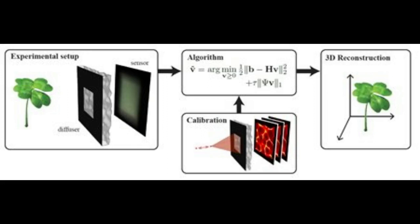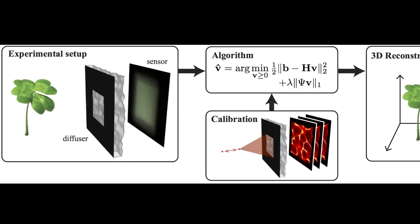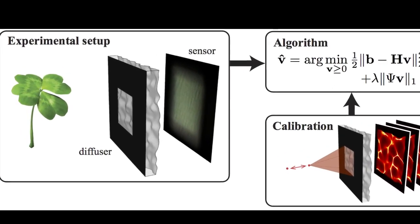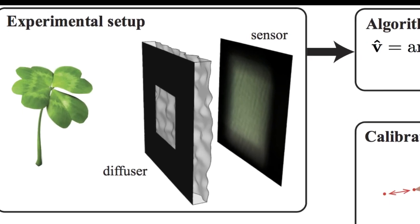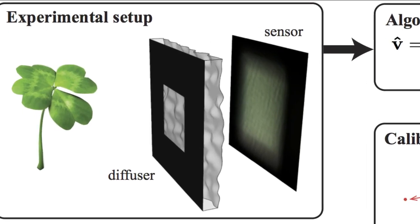Researchers have developed an easy-to-build camera that produces 3D images from a single 2D image without any lenses. In an initial application of the technology, the researchers plan to use the new camera, which they call DiffuserCam, to watch microscopic neuron activity in living mice without a microscope.